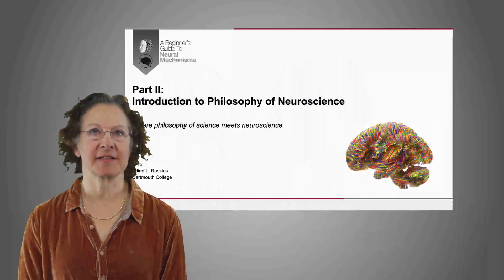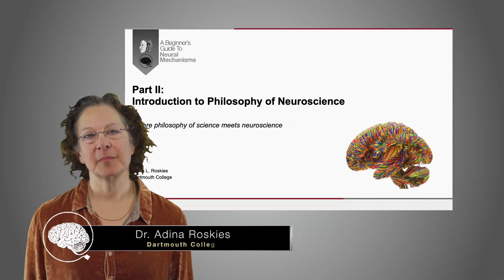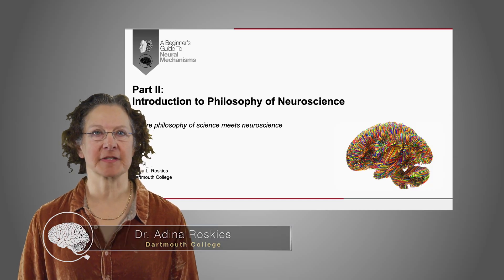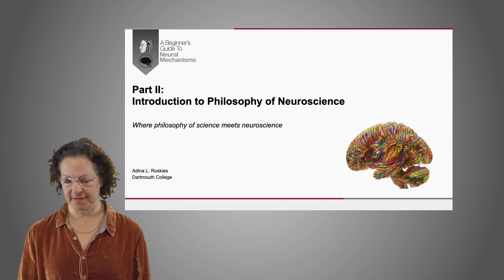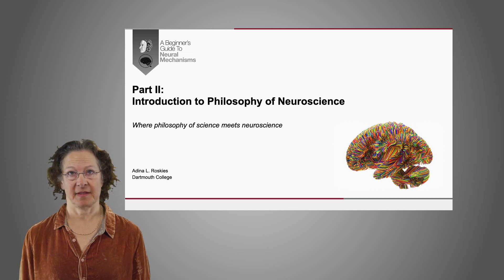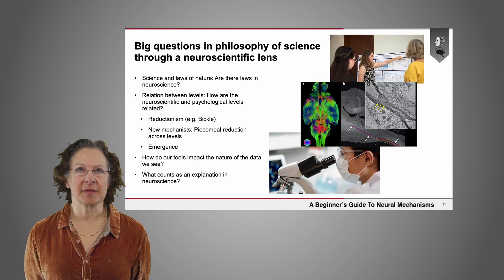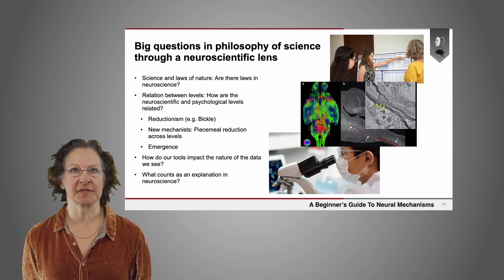Welcome back to a beginner's guide to neural mechanisms. In part two I'll talk to you about philosophy of neuroscience — that is where philosophy of science meets neuroscience. Philosophy of neuroscience is really about the big questions in philosophy of science and how to view them through a neuroscientific lens.